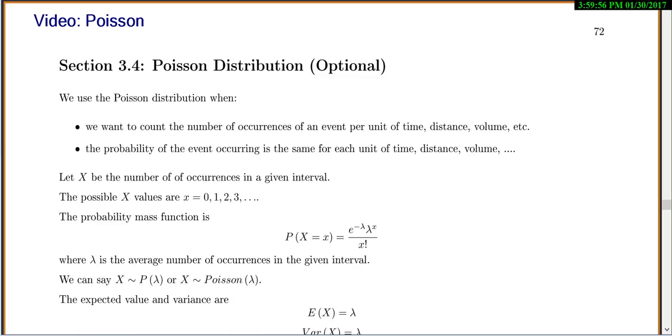So x is the number of occurrences in a given interval. The possible x values are 0, 1, 2, 3. The probability mass function is P(X = x) = e^(-λ) λ^x / x!, where λ is the average number of occurrences in a given interval.